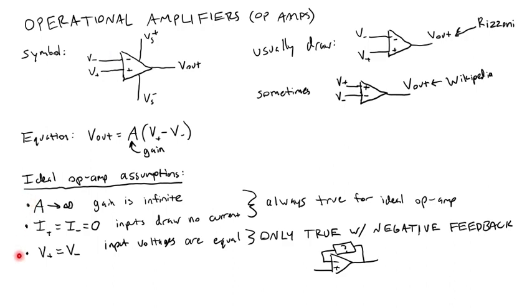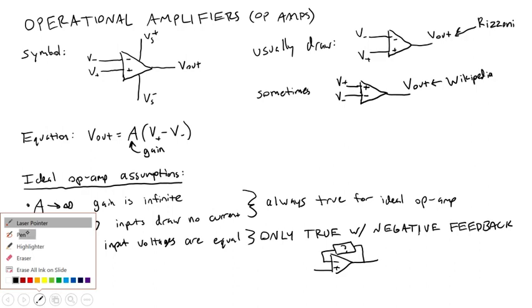These three assumptions, when combined, can lead to some interesting behavior from op-amps and allow us to design some useful circuits. For example, we have an op-amp with our output voltage V-out and negative feedback going back to the inverting or negative input.